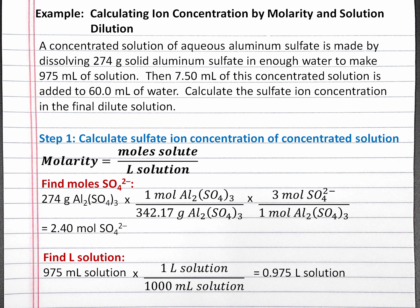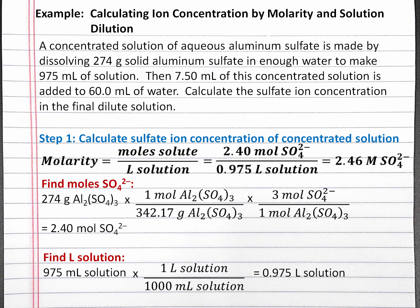Next, we can plug both of these numbers into our equation so that we have 2.4 moles of sulfate divided by 0.975 liters of solution, and we'll get 2.46 molar sulfate in our concentrated solution.